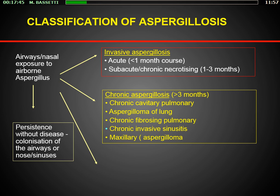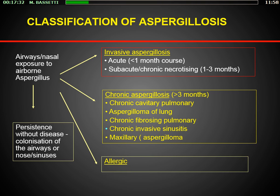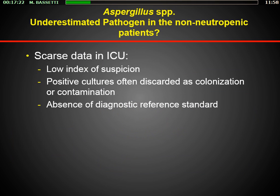We also have chronic aspergillosis when the disease course is more than three months, with different subtypes: chronic cavitary pulmonary, classic aspergilloma, the fibrosing form, invasive sinusitis, the maxillary form, and the allergic form. In the ICU, we will focus more on the invasive form and some forms of chronic aspergillosis.